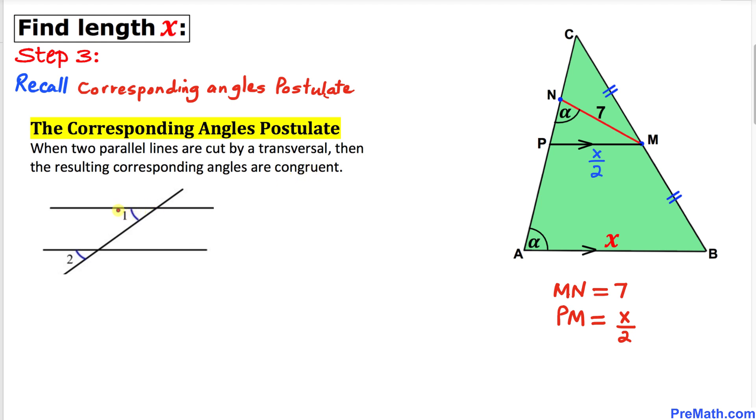As you can see in this diagram, angle 1 and angle 2 are corresponding angles and they are congruent. Now let's focus on our given problem. We can see that line segment PM and line segment AB are parallel.